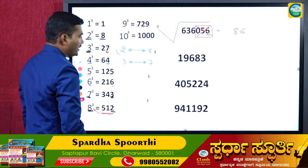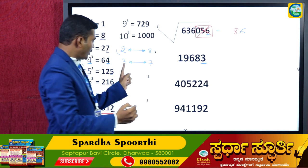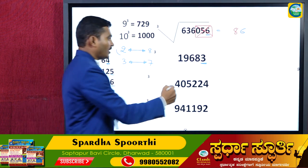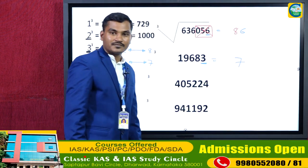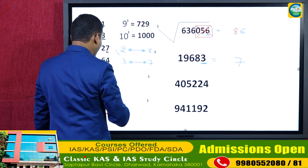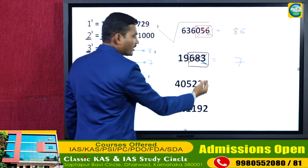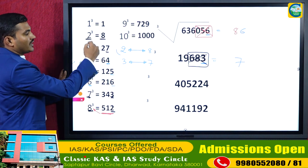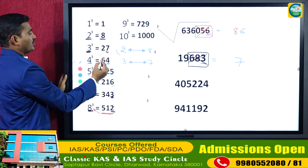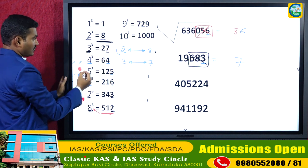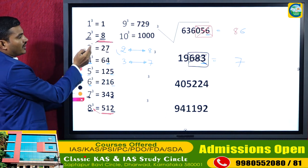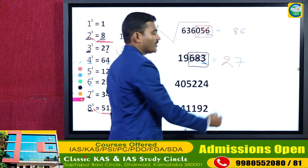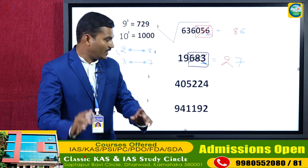Second cube root example: unit digit is 3, so the answer's unit digit is 7. Neglect the last three digits — 19 is remaining. Where does 19 lie? Between 8 (2³) and 27 (3³), so the previous cube root value is 2. The answer is 27.